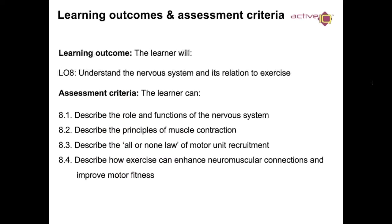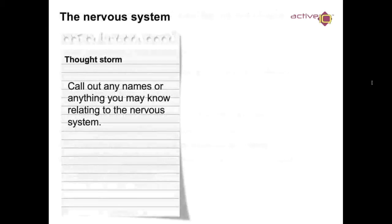So what is the nervous system? The learning outcomes for today: you'll be able to describe the role and function of the nervous system, the principles of muscle contraction in terms of the nervous system, the all-or-nothing law and its role in motor unit recruitment, and how exercise can enhance neuromuscular connections and improve motor fitness.